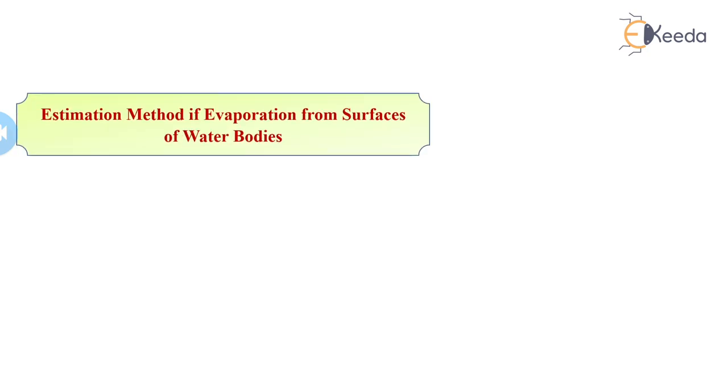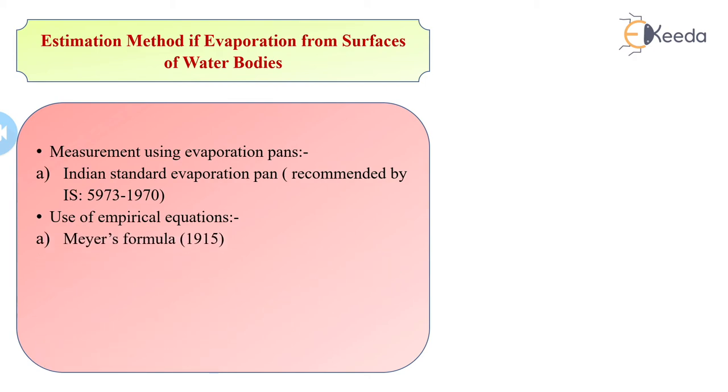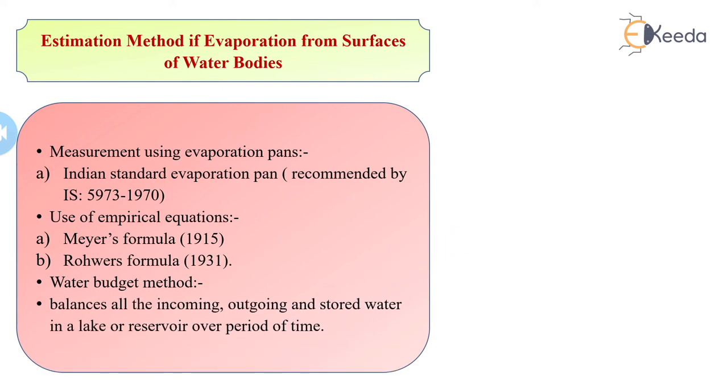Next is the estimation method of evaporation from the surface of water bodies. Measurements using evaporation pans: Indian standard evaporation pan recommended by IS 5973-1970. Use of various empirical equations, amongst which we have Meyer's formula, Rohwer's formula. Meyer's was found in 1915, Rohwer's formula was found in 1931. Water budget method: it balances all incoming, outgoing, and stored water in lake or reservoir over a period of time.